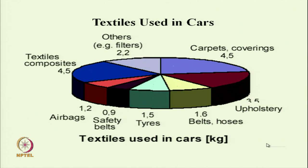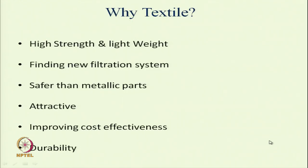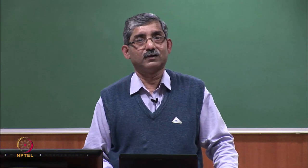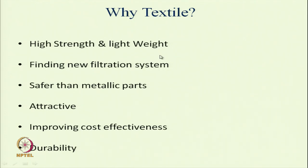Why do we need textiles in automobiles? This is due to high strength and light weight — those are the unique characteristics of textiles. The specific strength is very high. In automobiles, some applications need high strength and lighter weight is required for fuel efficiency. Textile-based filters have high filtration efficiency with low pressure drop and are safer than metallic parts. We can make the interior more attractive, cost effective, and durable.